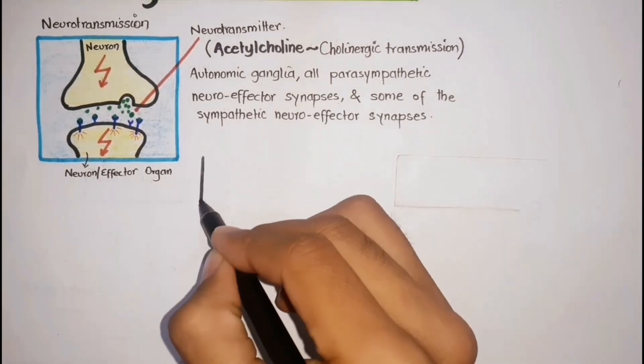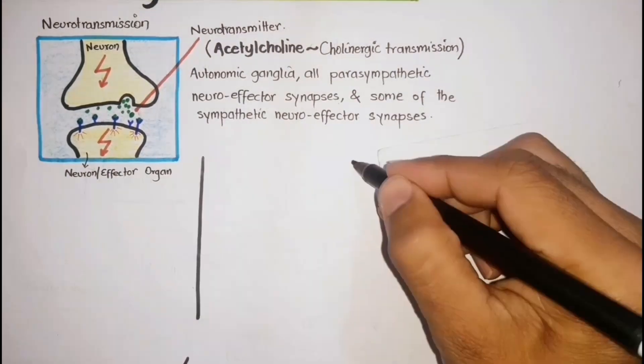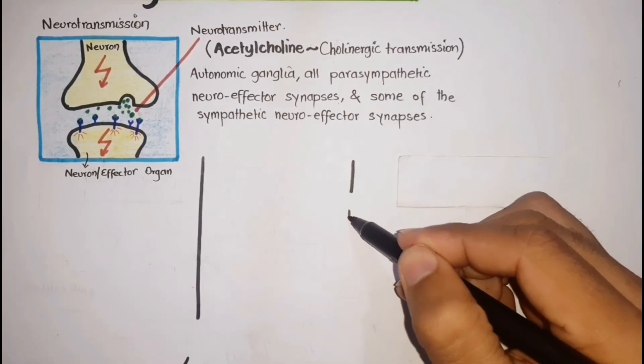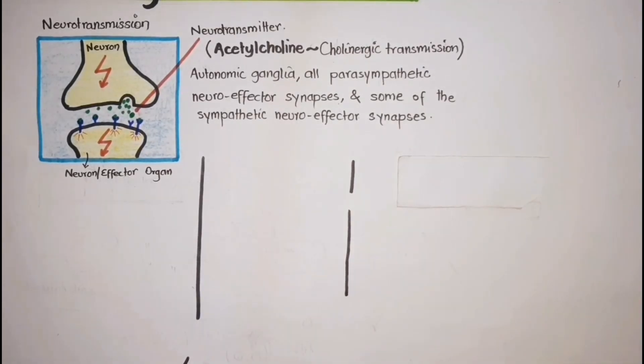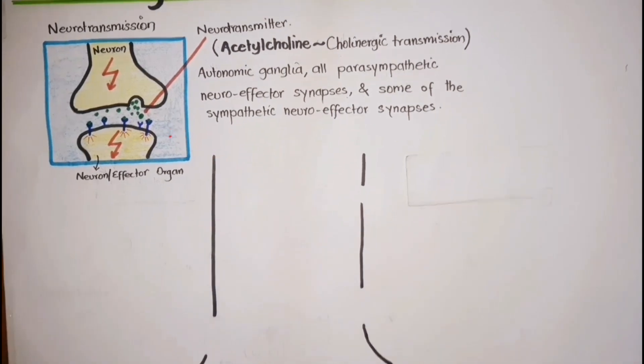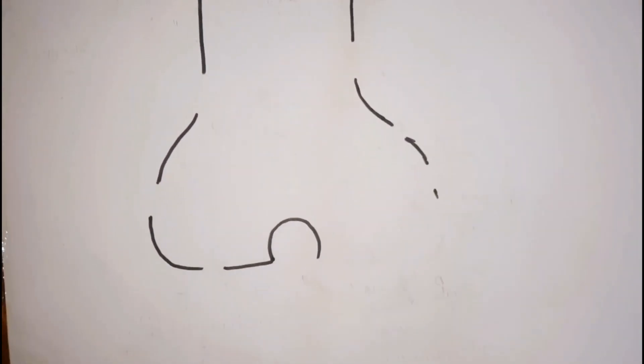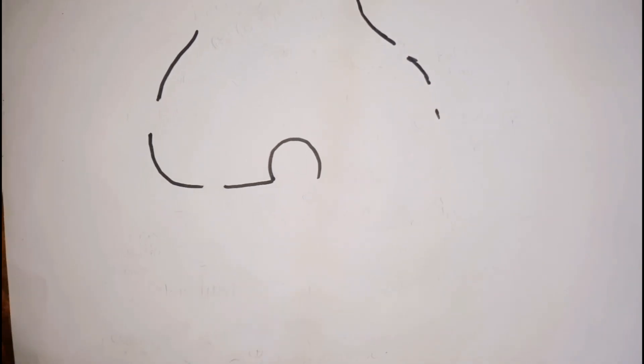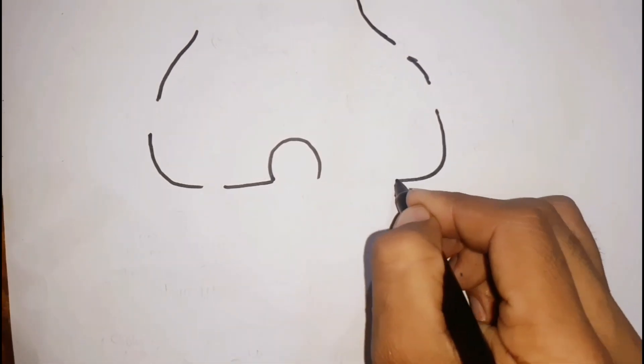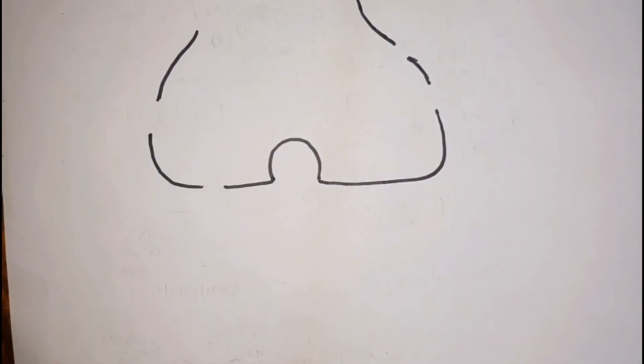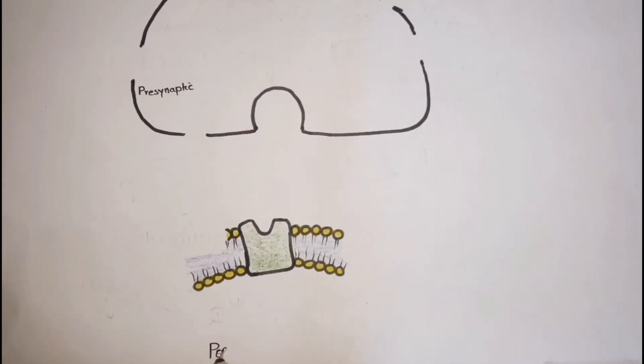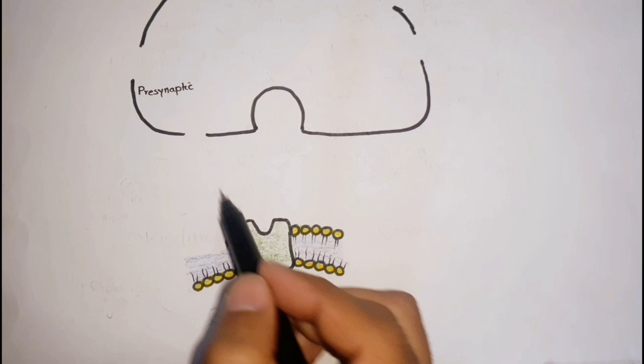Cholinergic transmission involves six steps. Here I am zooming into this synapse in which acetylcholine is used as a neurotransmitter. This is a neuron and its presynaptic axon terminal. This is the postsynaptic site and this is the synaptic cleft.